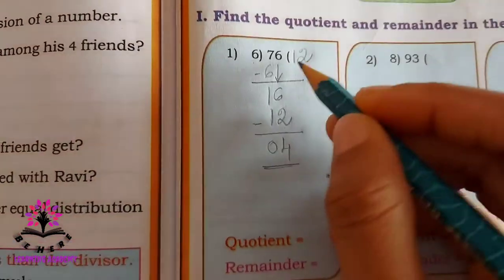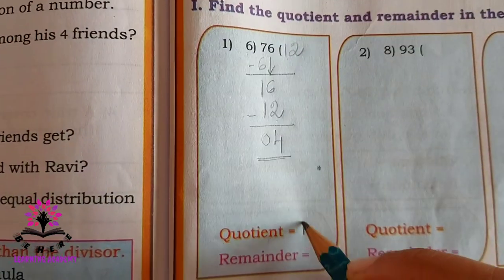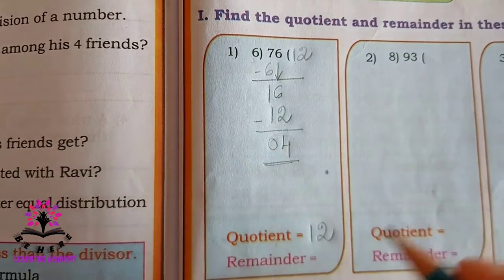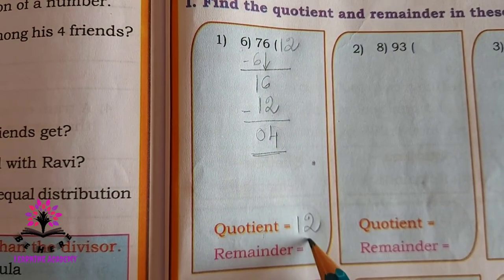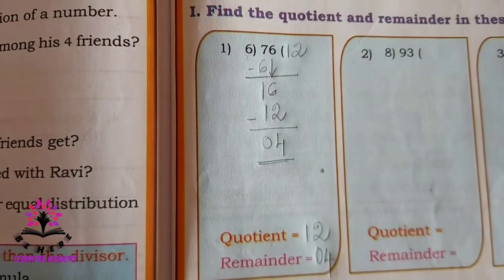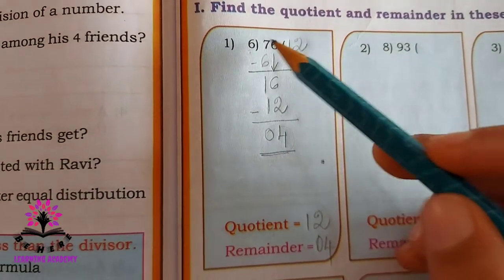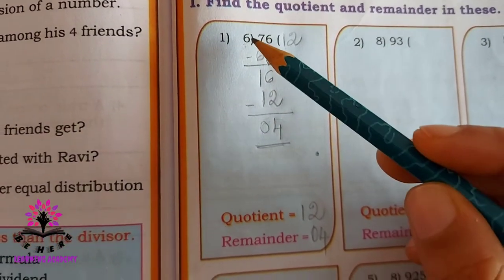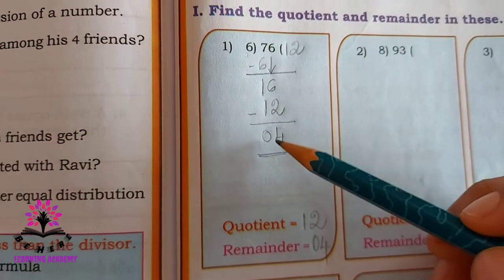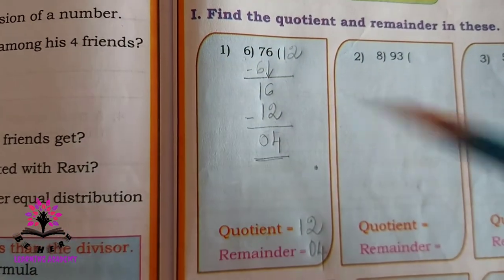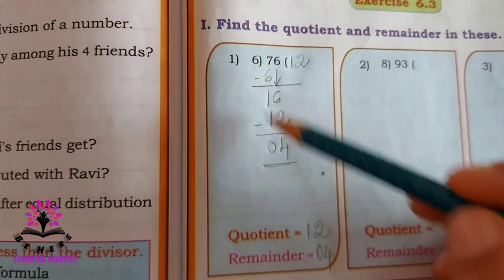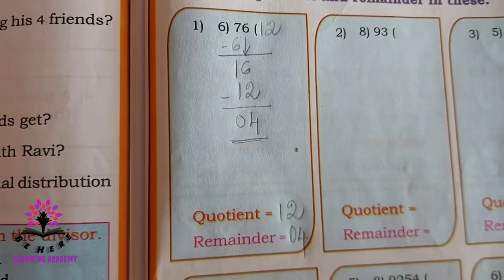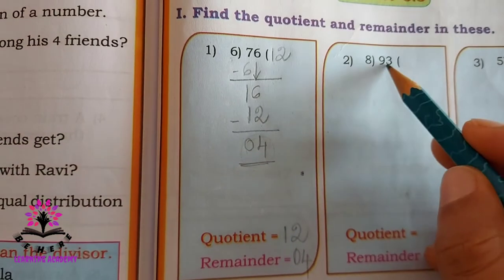So the quotient — the answer — is 12, and the remainder is 4. You cannot divide it further because 4 is smaller than 6, so 4 is the remainder.